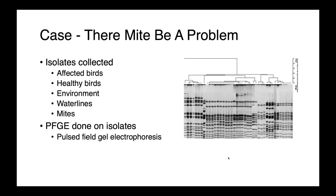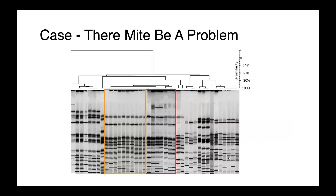We started by collecting a large number of samples: swabs from affected birds and diagnostic isolates, cloacal swabs from healthy birds, environmental samples, water line samples, and also tubes of mites that we crushed up and cultured. We grew E. coli from all of these different sources and compared them using a molecular epidemiological technique called pulsed-field gel electrophoresis. The DNA banding patterns generated looked like barcodes. What immediately stood out is that isolates from the dead birds had exactly the same banding pattern as isolates grown from mites, but a different banding pattern than E. coli from the environment or healthy birds.